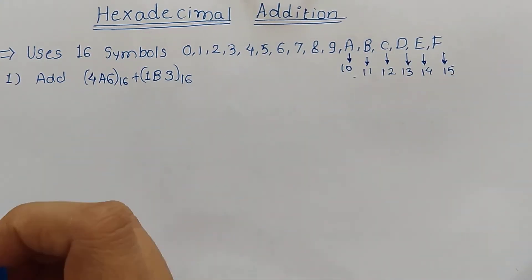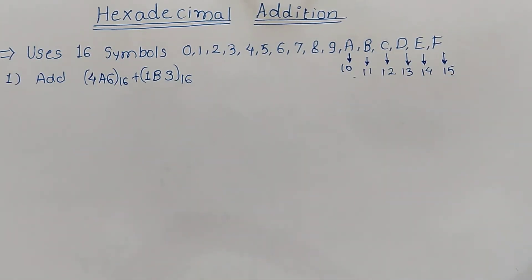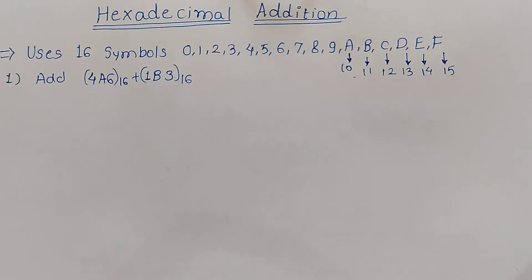Now we will discuss how hexadecimal addition is performed. Hexadecimal addition is performed in a similar way as decimal addition. Digits are added in decimal and then the hexadecimal equivalent is obtained. When the result is obtained, we write the sum term and the carry is carried over to the next digit position.